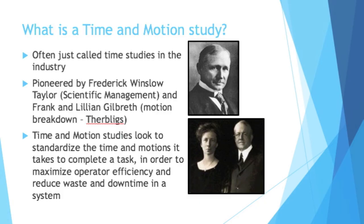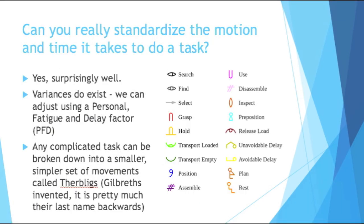So if you discover something groundbreaking or really help the industry out, maybe you can name something after yourself. Can you really standardize the motion and time it takes to do a task? Yes, actually you can, surprisingly well. I've done hundreds of time studies and they generally hold up. Once you time a few people and get a feel for how long it takes, that should hold with the rest of the population. Of course there are variances. We call these personal fatigue and delay factors and you can use that factor to adjust the times.